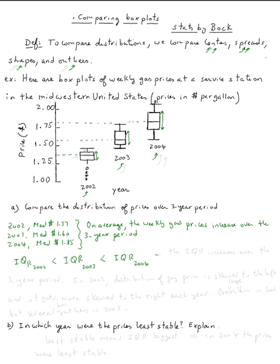IQR of 2002 is less than IQR of 2003, that length, and then less than IQR 2004. Therefore, we can say the IQR increases over the three-year period.